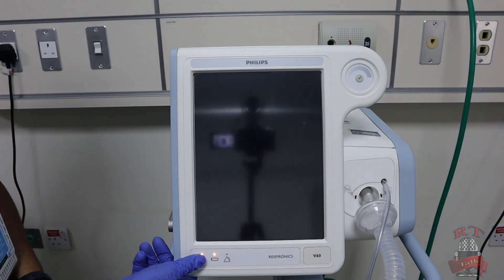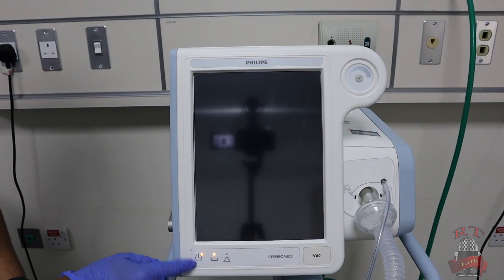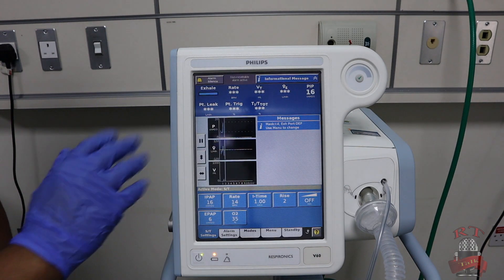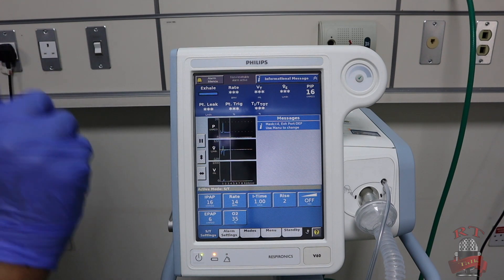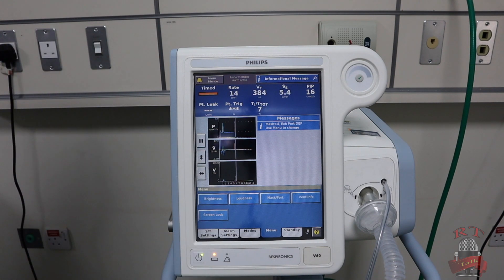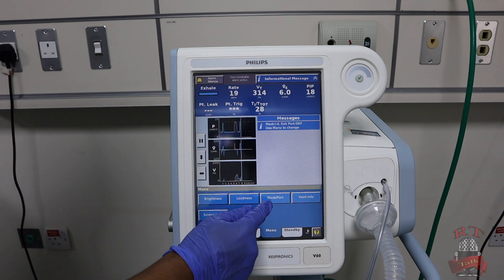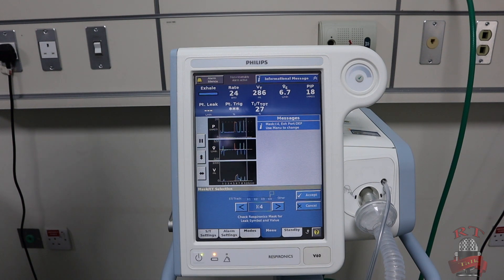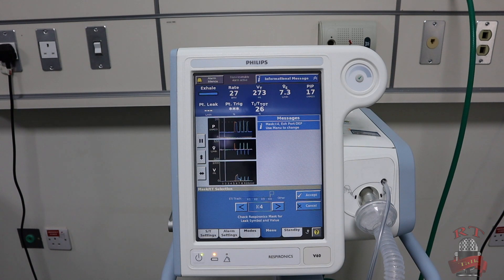We will switch on our machine from the side on the screen. After you start your machine, you will go to the menu, then you will go to mask and board. You will choose the number of the mask you're using. I will show you right now.